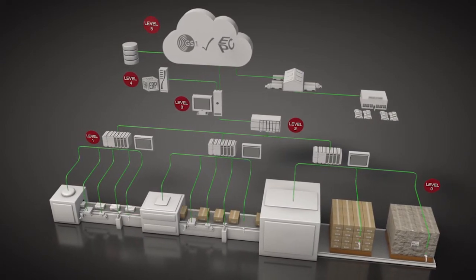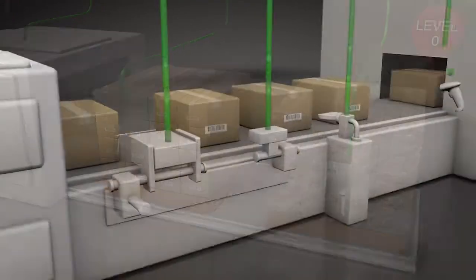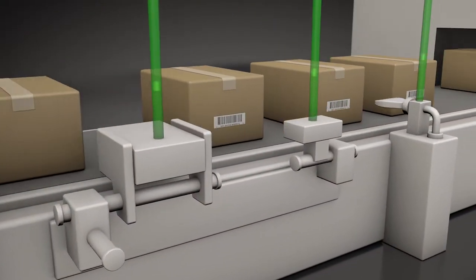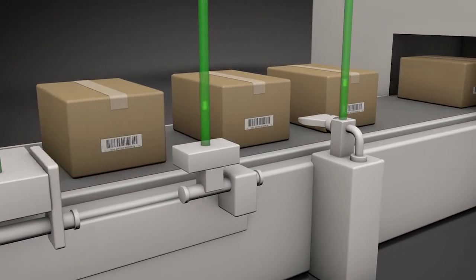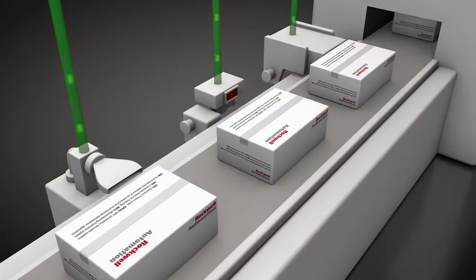Here's how it works. The Rockwell Automation solution expands level zero to include packaging machines and their associated devices, such as printers, vision systems, and radio frequency identification systems.